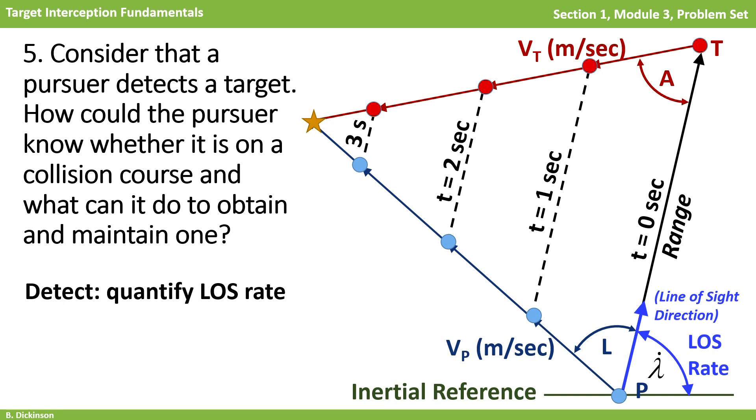If the line of sight direction is changing, or lambda dot is non-zero, then from the pursuer's vantage, the target will appear to move ahead or behind. In this case, the pursuer could perform an aerodynamic maneuver to zero the line of sight rate. Note that this action changes the speed of the pursuer, and therefore, by regulating the line of sight rate, indirectly a new collision triangle geometry is obtained. Obtaining and maintaining a collision course is a feedback process involving continuous adjustment of the pursuer velocity vector.